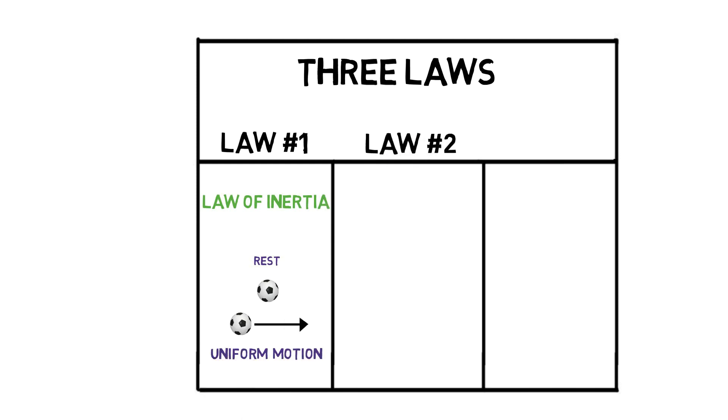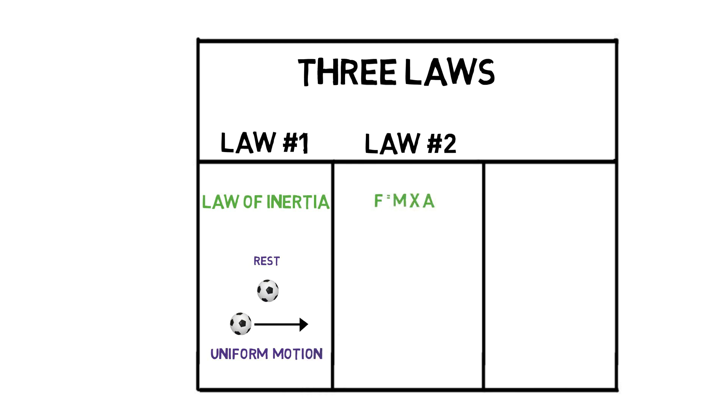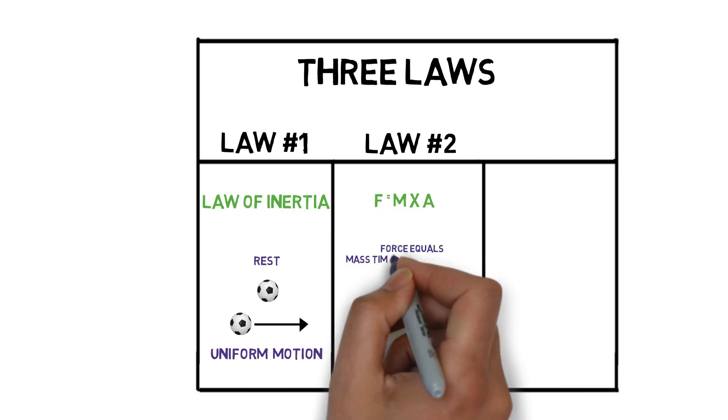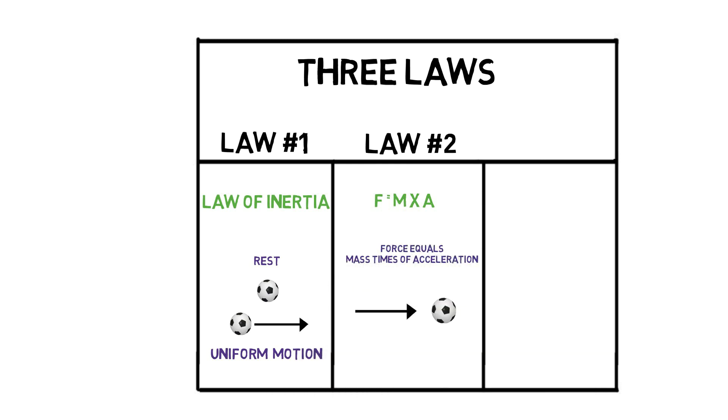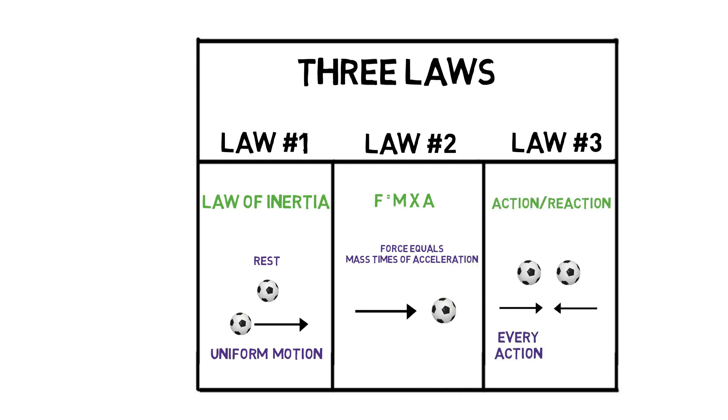Newton's second law states force is equal to mass times acceleration, which means the acceleration of an object is dependent upon two variables: the net force acting upon the object and the mass of the object.